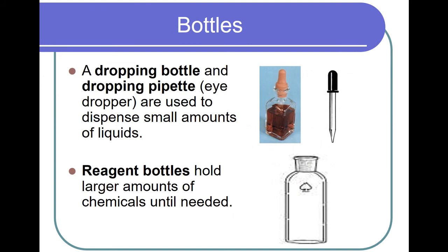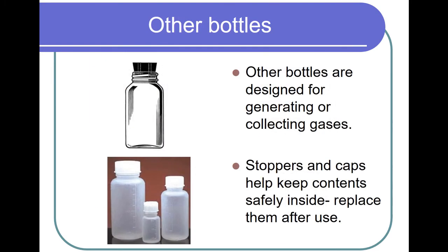A dropping bottle and dropping pipette are used to dispense small amounts of liquids. Reagent bottles hold larger amounts of chemicals until needed. Other bottles are designed for generating or collecting gases. Stoppers and caps help keep content safely inside, so replace them after use.